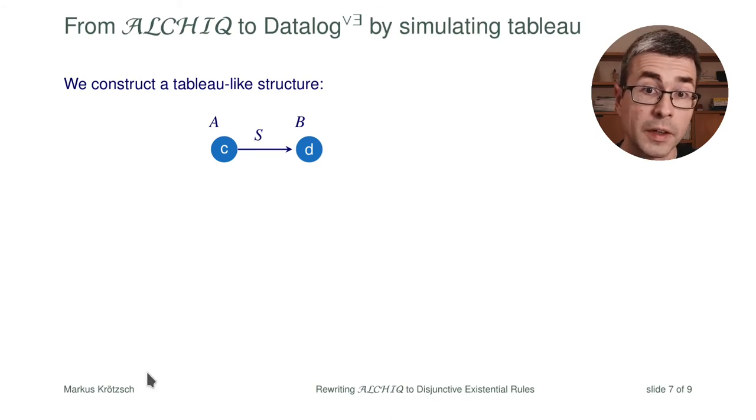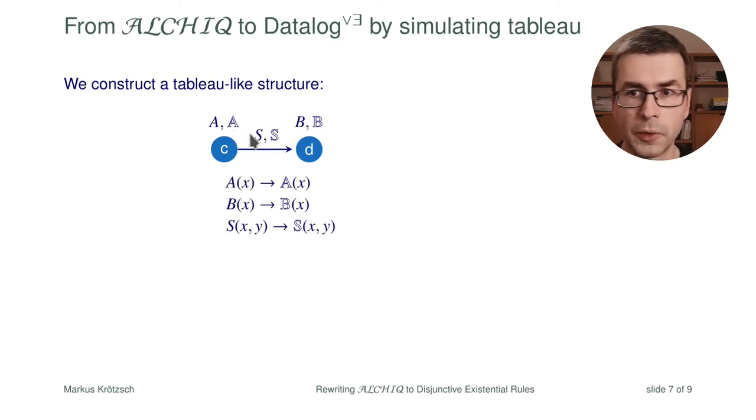But this will lead to very large predicates. Now we would like to avoid this and to do this we use a very different technique based on disjunctive existential rules where we want to mimic a tableau calculus in rules. How does a tableau work? We start with some kind of A-box, some facts that are given to us, and then we will construct more information about them.